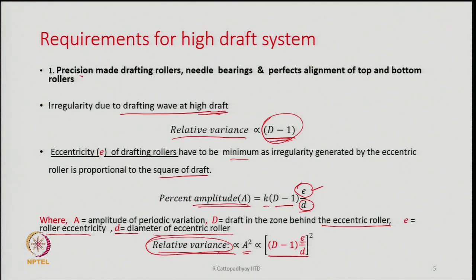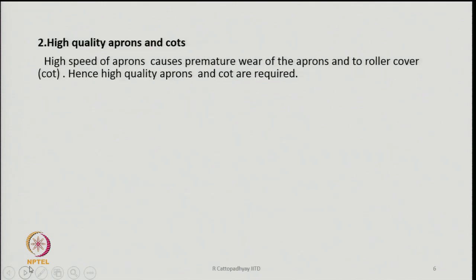We need precision-made drafting rollers, needle bearings, and perfect alignment between top and bottom rollers — all of these become very important for a high drafting system to be successful. We also need high quality aprons and cots. High speed causes premature wear of aprons and top roller cots, so higher quality materials are required so that they do not wear out quickly.